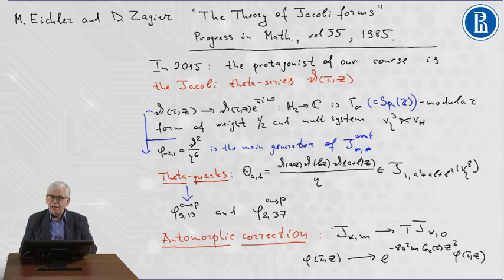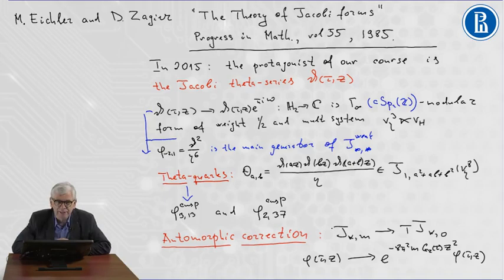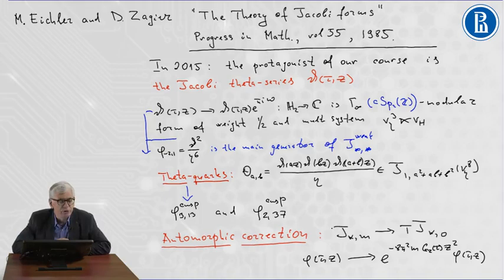In the theory of Kac-Moody Lie Algebras, the denominator function, the Kac-Weyl denominator function of affine Lie Algebras are written in terms of Jacobi Forms.